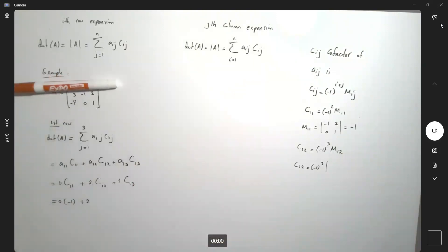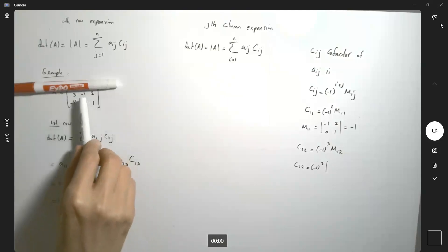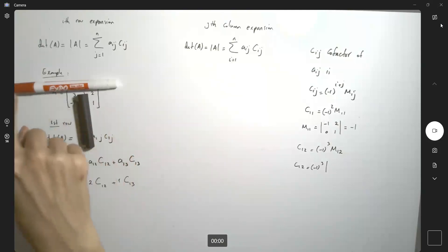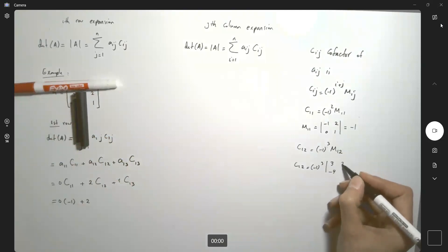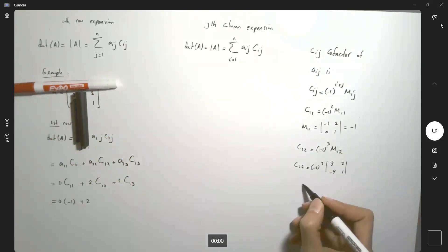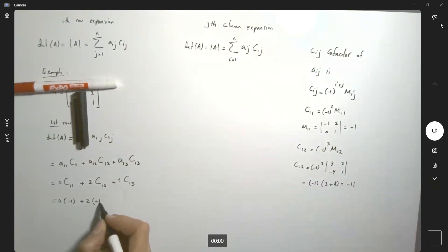So you're eliminating the first row and second column. What's left? You have 3, -4, 2, and 1. So this is equal to -1 times (3 + 8) or -11. So 2 times -11. Very good.